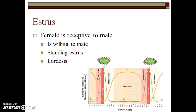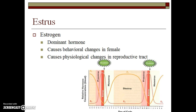Estrous is the time when the female is receptive to the male — in other words, this is the time when the female is willing to mate with the male. During estrous, the female will display several behavioral changes. Many females will stand to be mounted; other females will arch their backs, such as queens. The arching of the back is known as lordosis. The dominant hormone being secreted during estrous is estrogen, which causes both the behavioral changes and physiological changes within the reproductive tract of the female.